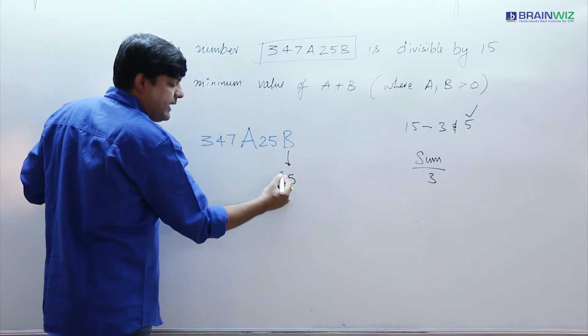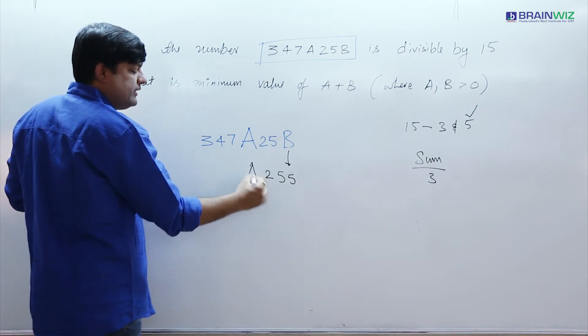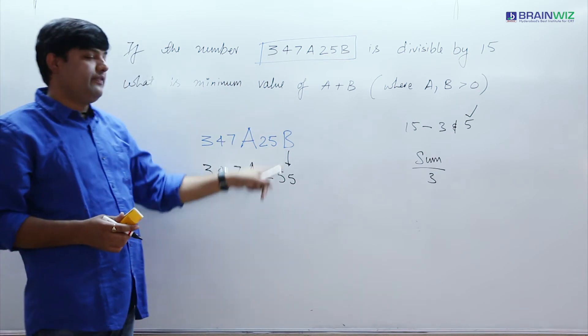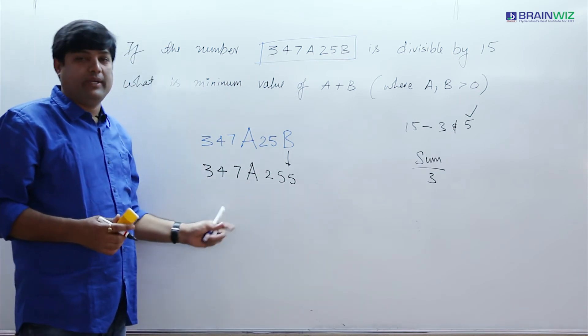And this is copied as usual 5, then 2. I have no idea about this missing term A yet. 7, 4, 3. Now when I substitute here 5, definitely this number is divisible by 5.